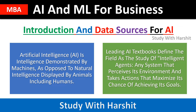Artificial Intelligence is intelligence demonstrated by machines, as opposed to natural intelligence displayed by animals including humans. Leading AI textbooks define the field as the study of intelligent agents — any system that perceives its environment and takes actions that maximize its chance to achieve its goals.